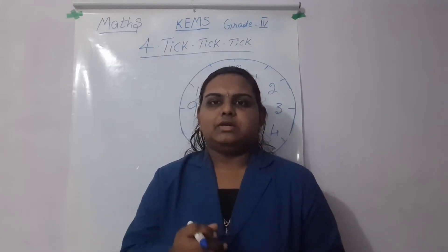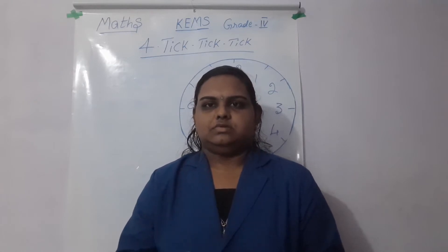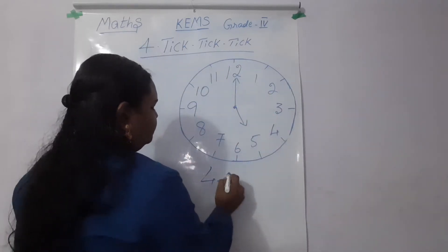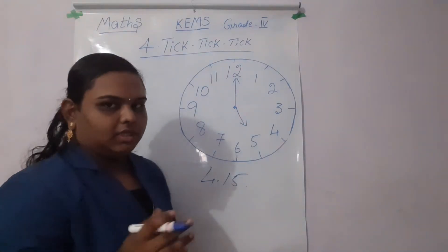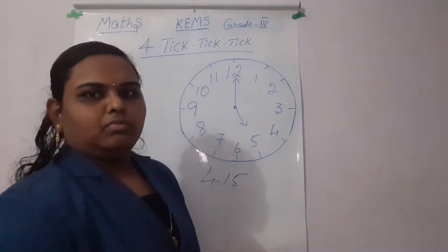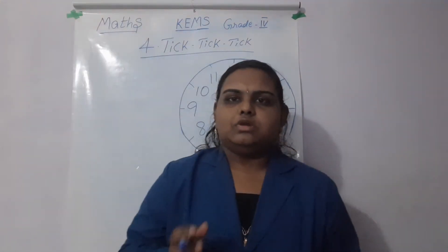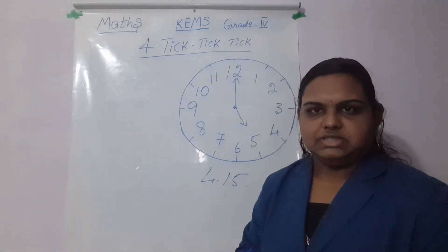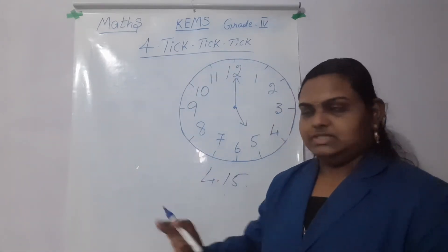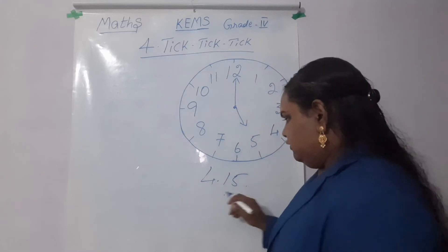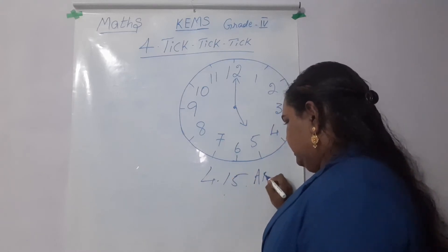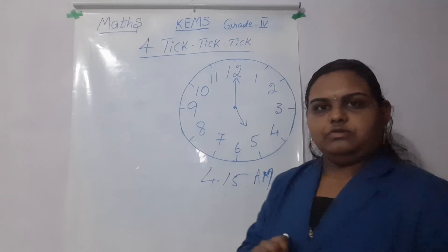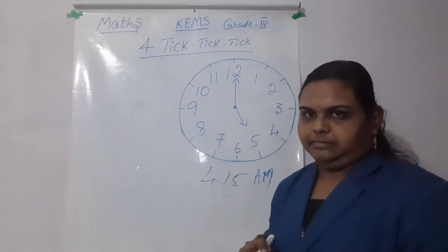If you have to wake up at 4:15 — that is 4 hours 15 minutes — you have to wake up at this time. So we will set the alarm for 4:15 a.m.